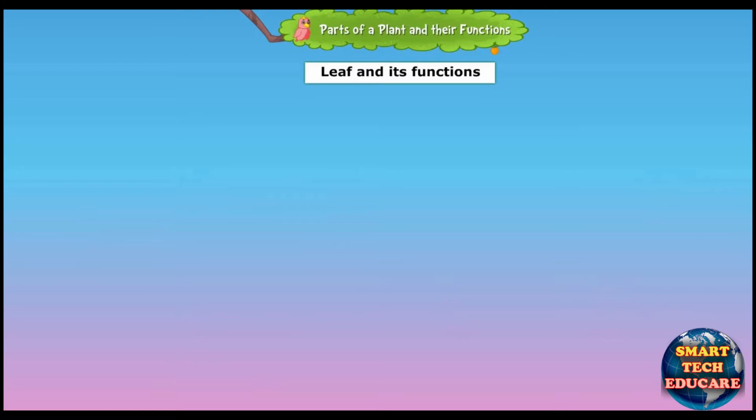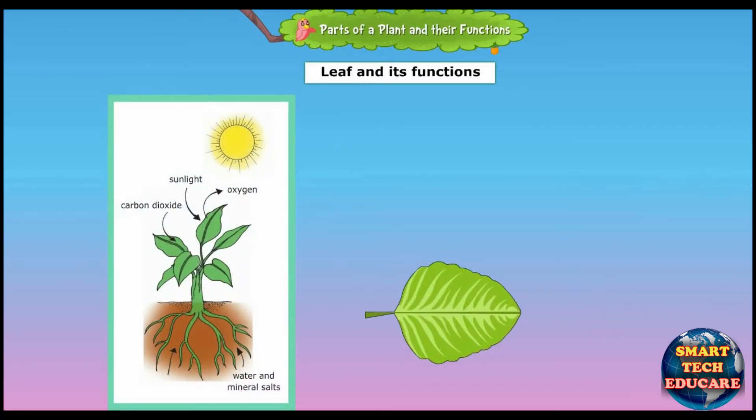Leaves are the green parts of a plant. A green substance called chlorophyll found in the green leaves uses sunlight and prepares food for the plant. The plants breathe through the tiny pores called stomata present in the leaves.